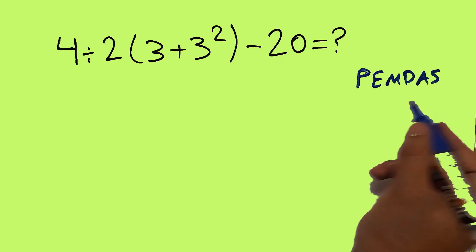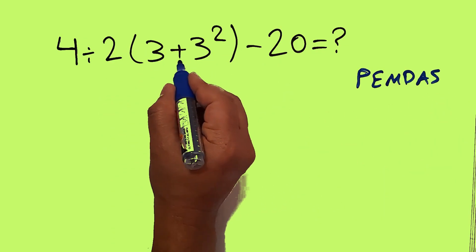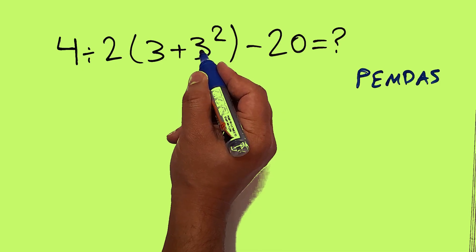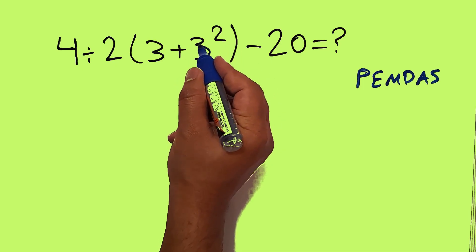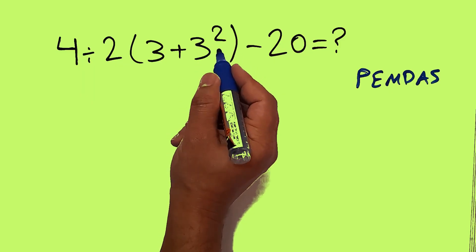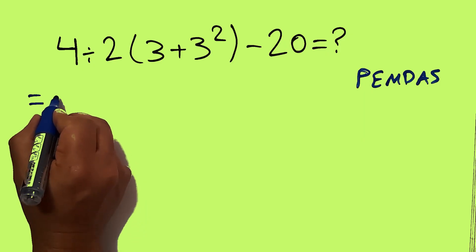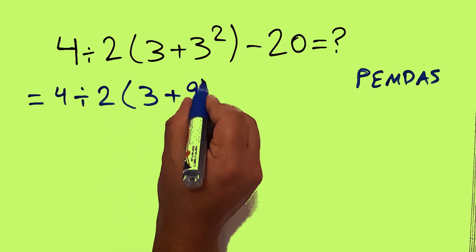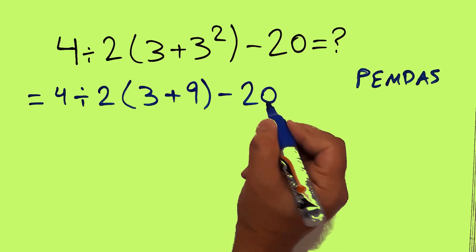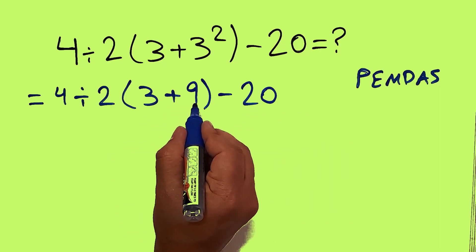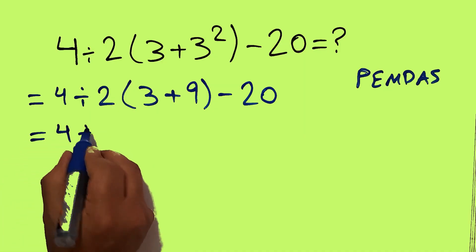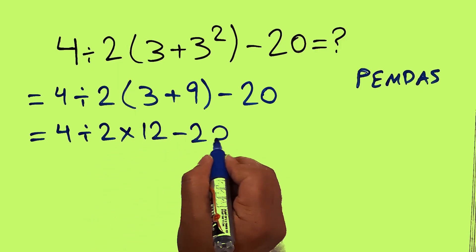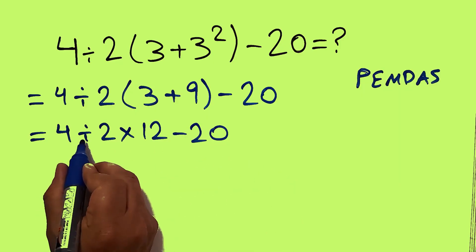So here, we first do these parentheses, and inside these parentheses we have this addition and this exponent. First we have to do this exponent, which is 3 squared, and 3 squared gives us 9. So our expression equals 4 divided by 2, then times 3 plus 9, minus 20. Now 3 plus 9 equals 12. So: 4 divided by 2, then times 12, minus 20. And here we have one division, one multiplication, and one subtraction.